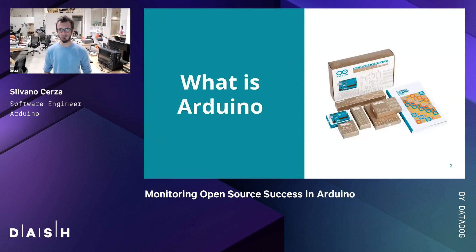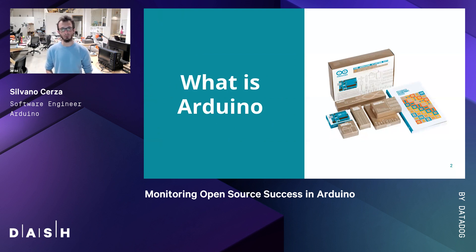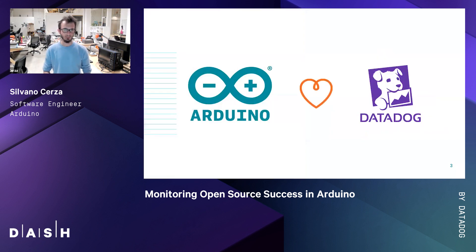Arduino is an open-source hardware and software company, project and user community that designs and manufactures single-board microcontrollers and microcontroller kits for building digital devices. In the course of developing software downloaded and used by millions around the world, we have found it vitally important to be aware of the quality and performance of our software. In this talk, I'll be telling you a story on how we, the tooling team, started using Datadog in an unusual way to understand how successful some of our open-source projects are, including the Arduino CLI.